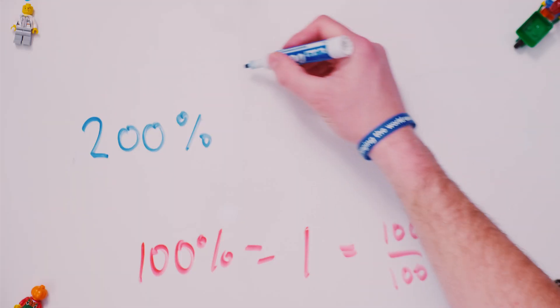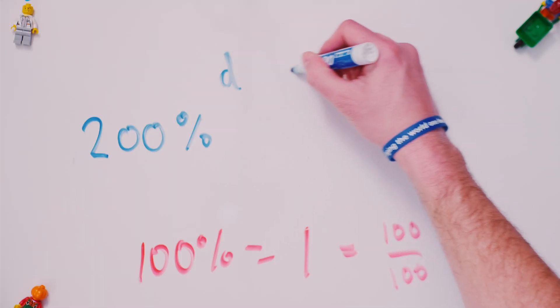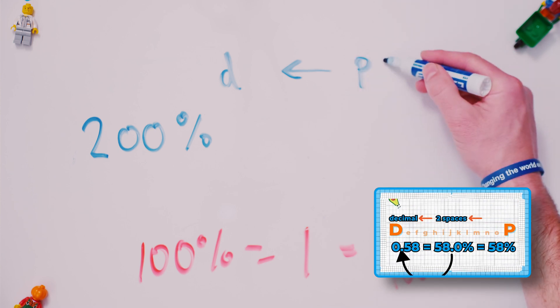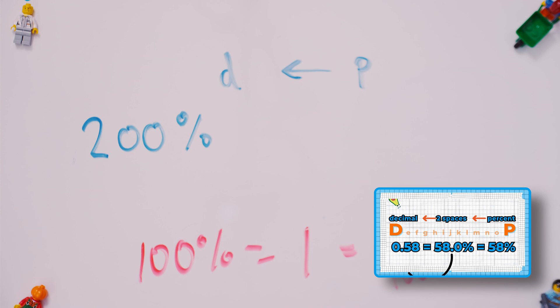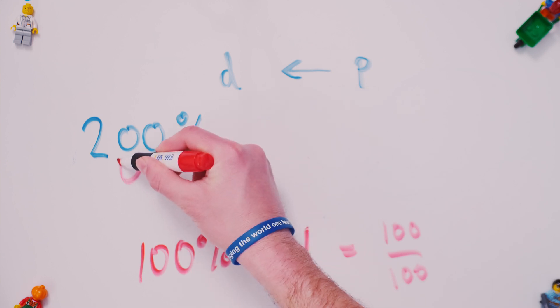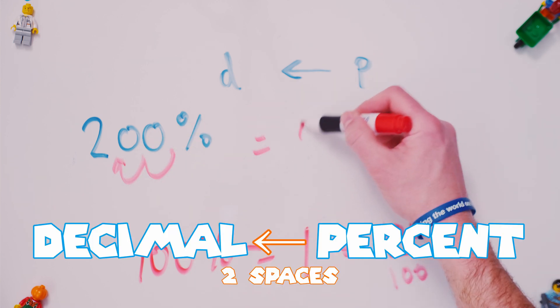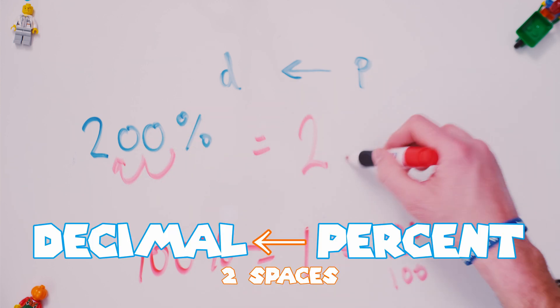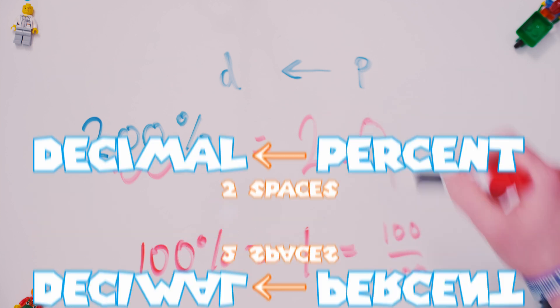200%. Remember, you're going to go from the P to the D when you look at the alphabet. How many spaces? You're going to go two spaces. So you're going to go one, two. And that's how you get two point zero.